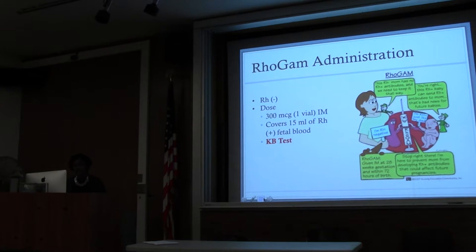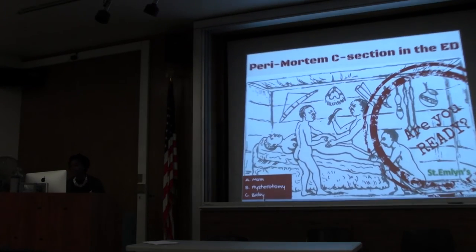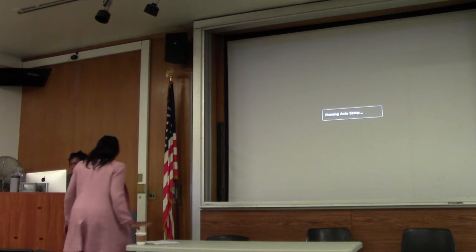The Kleihauer-Betke test essentially tells us how much fetal blood is present. It's an acid elution test — you place the blood specimen onto an analysis tool with the elution source and it will turn bright pink where fetal cells are present. Dr. Wilcox will now discuss the perimortem cesarean section.